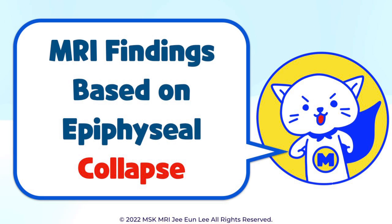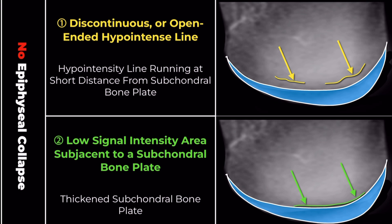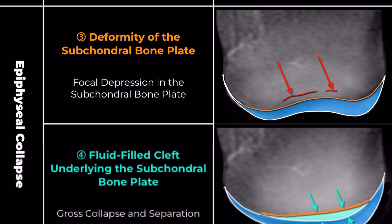MRI findings can be categorized based on the presence or absence of epiphyseal collapse. In cases where there is no epiphyseal collapse, you'll see a hypointense line that is discontinuous or open-ended, running a short distance from the subchondral bone plate. Additionally, a low signal intensity area subjacent to the subchondral bone plate is observed along with a thickened subchondral bone plate.